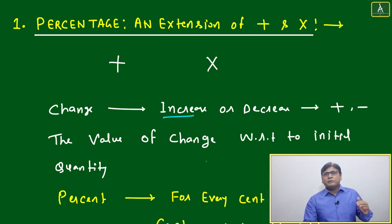Your income may increase or your income may reduce. Your income may go down or increase. GDP of India can go up, can go down. The value of change with respect to initial quantity - that is called percentage.